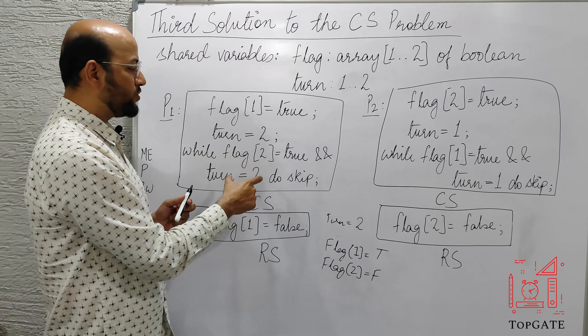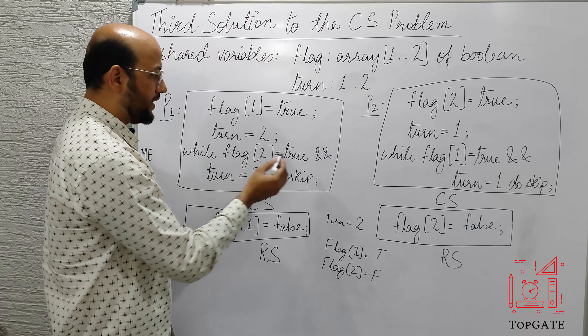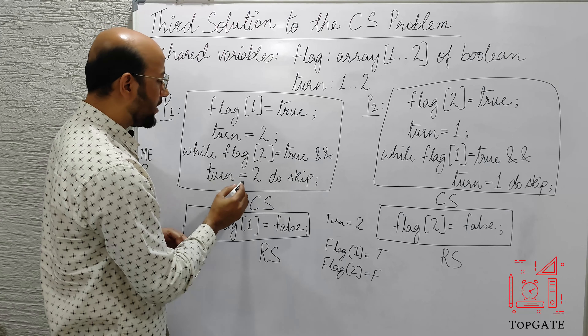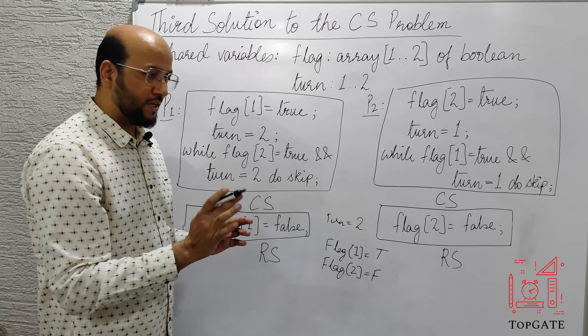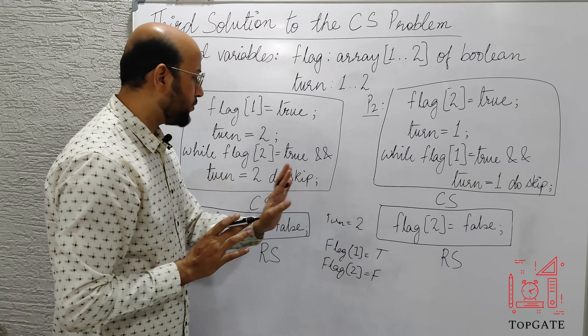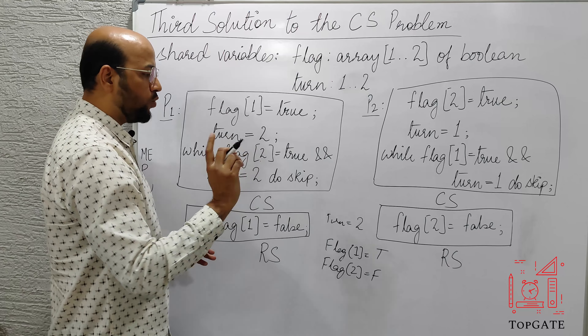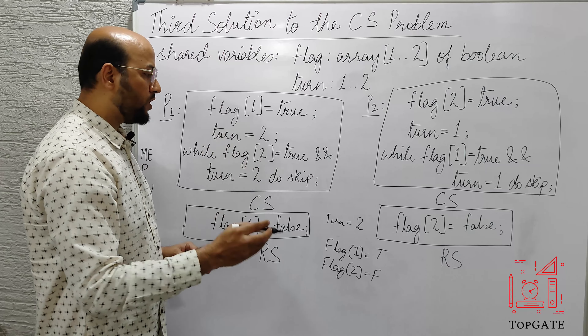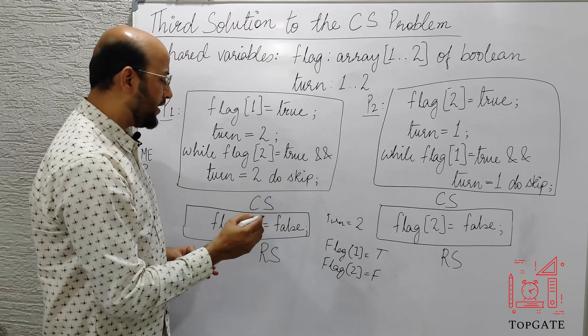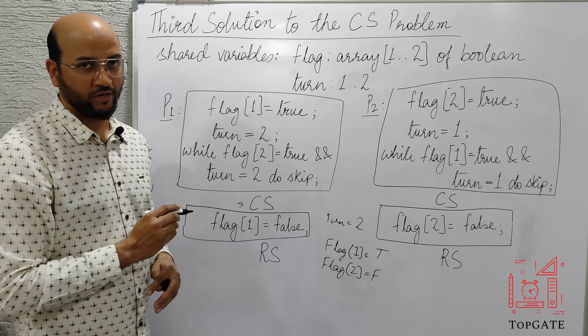Since flag[2] is initially false, that condition becomes false. And turn is equal to 2 — that is what P1 just set. So out of these two conditions, one condition is false. Therefore, this while loop is broken and process P1 goes to the critical section.